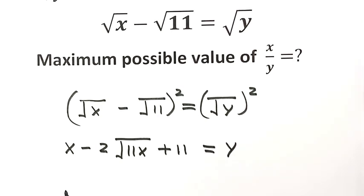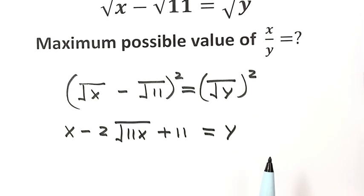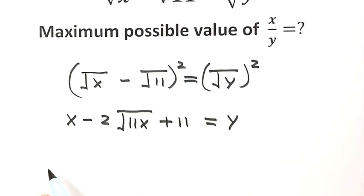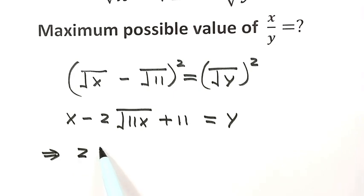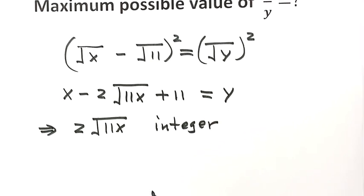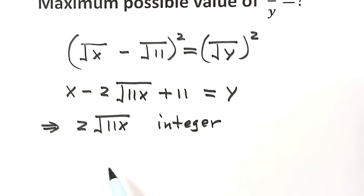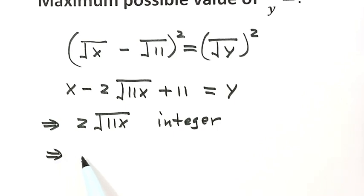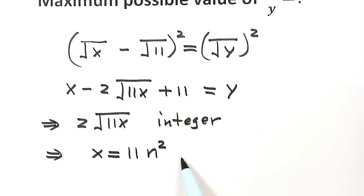Because x and y are positive integers, this means the term 2 times the square root of 11x must be an integer. This implies that 11x is a perfect square, so x equals 11 times n squared, for some positive integer n.